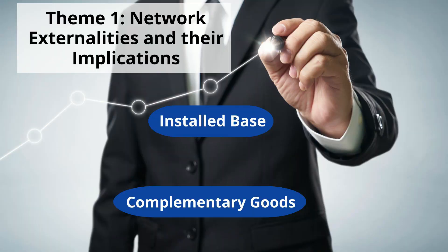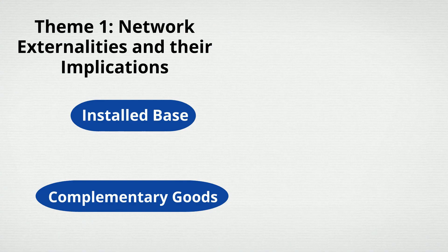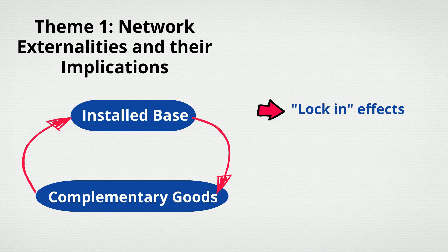The first theme to emerge in the literature is network externalities and their implications. Network externalities refer to the situation where users derive more benefits the more other users there are of the same or similar goods, such as when a large installed base attracts complements and more complements attracts an even larger installed base. The self-reinforcing effects of network externalities could lead to technologies getting locked in or out, winner-take-all markets, and excess momentum and inertia in an industry.